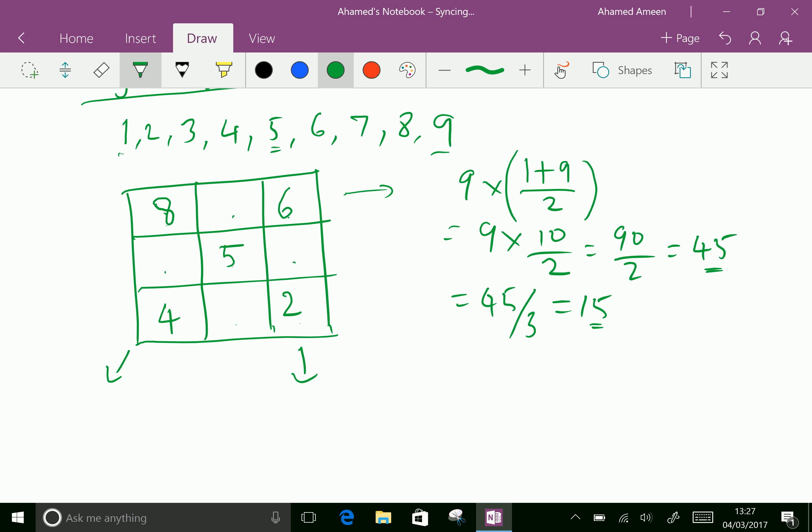8 plus 6 is 14. Now our magic number is 15, so we should get 1 here. Then 1 plus 5 is 6, so 15 minus 6 is 9. Now 8 plus 4 is 12, 15 minus 12 is 3. Then 3 plus 5 is 8, and 15 minus 8 is 7.